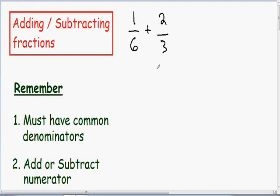Now I want to go over an example of adding two fractions that do not have common denominators. Remember: whenever you're adding and subtracting fractions, you must have common denominators. That means the bottom numbers in the fractions have to be the same.